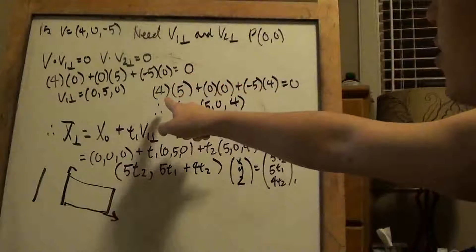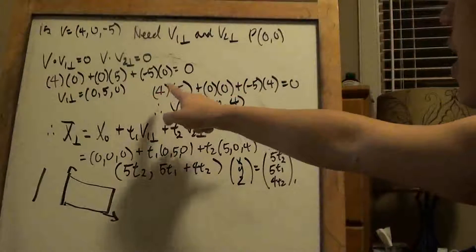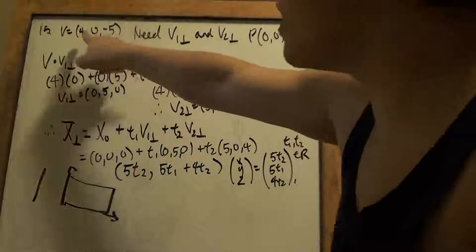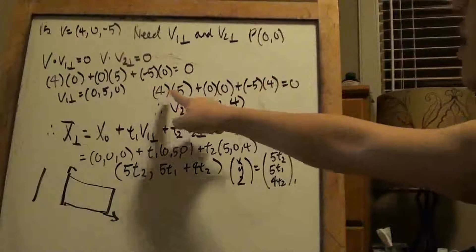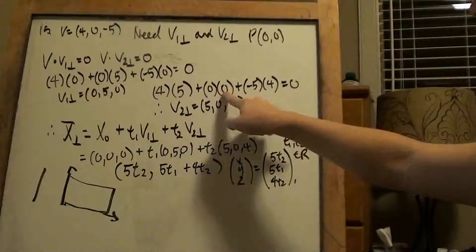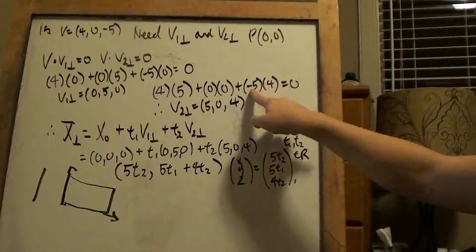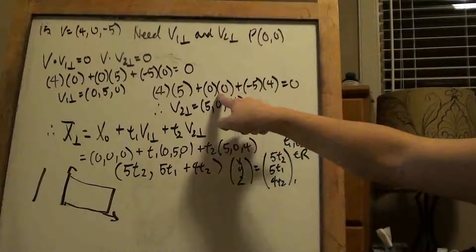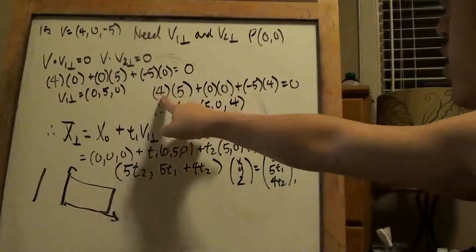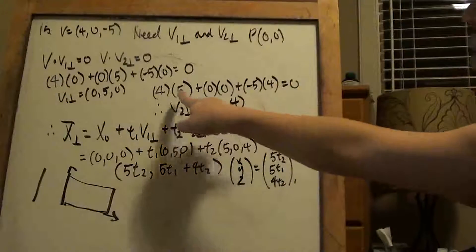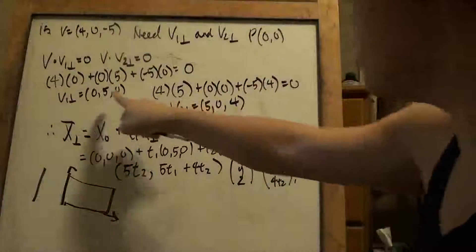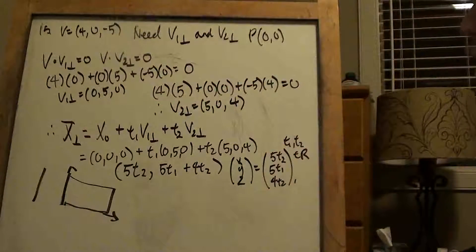For the other vector I have to find a different way to make it zero. With 4 and negative 5, I can make it 20 and negative 20. That's four times five equals twenty, zero in the middle (we don't care), and then using the a, b and b, a relationship we were talking about. So five, zero, four — those two are orthogonal. I'll use these two vectors to create the new plane equation.